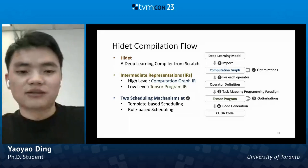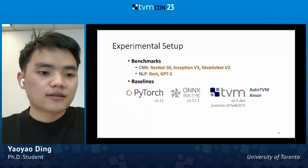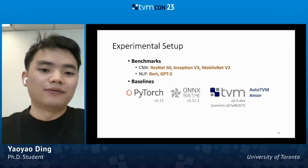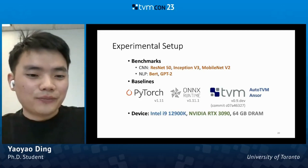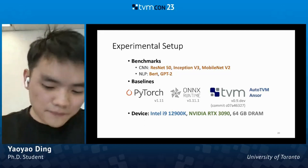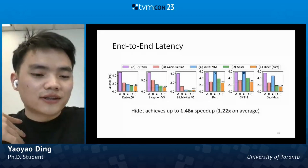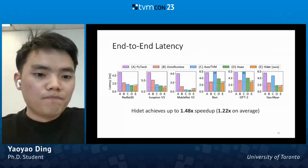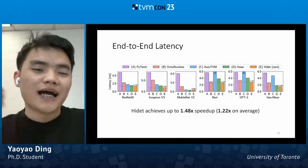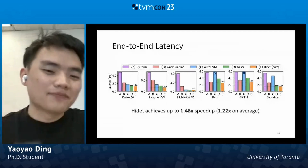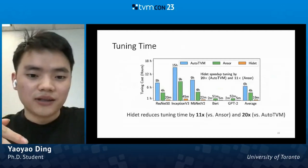We benchmark on five representative deep learning models and compare against PyTorch, ONNX Runtime, and TVM version 0.9, equipped with AutoTVM and Ansor. This experiment is done on an RTX 3090 with a powerful CPU. HiDet can achieve up to 1.46x and 1.22x on average speedup. This is because HiDet can implement many optimizations that were implemented in vendor libraries but had not been implemented by TVM at that time. We can also greatly reduce tuning time by 11 times compared with Ansor and 20 times compared with AutoTVM, because our scheduling space has been greatly reduced.